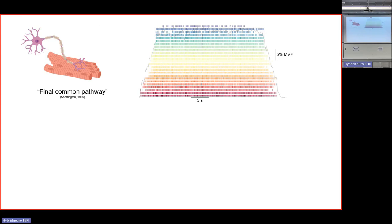In terms of motor units, why we're interested in them is because they represent the final common pathway of activation signals. Motor units are effectively the most fundamental property of the neuromuscular system. This structure transforms the activation signal that converges on the alpha motor neuron and transduces it into contractile activity via the muscle fiber. They can effectively predict movement, and they're the only neural cell in humans that can be studied directly.